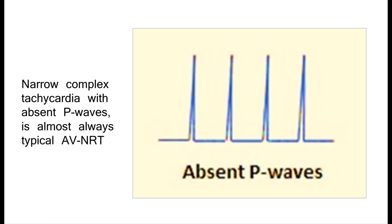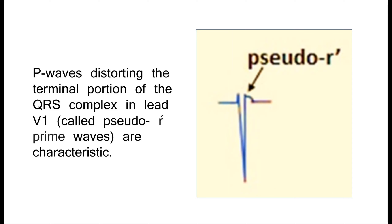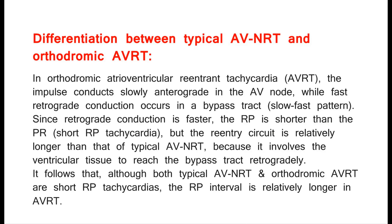To summarize ECG features: narrow complex tachycardia with absent P-waves is almost always typical AVNRT. P-waves distorting the terminal portion of the QRS complex in inferior leads — called pseudo-S waves — are characteristic. P-waves distorting the terminal portion of the QRS complex in lead V1 — called pseudo-R' waves — are also characteristic.